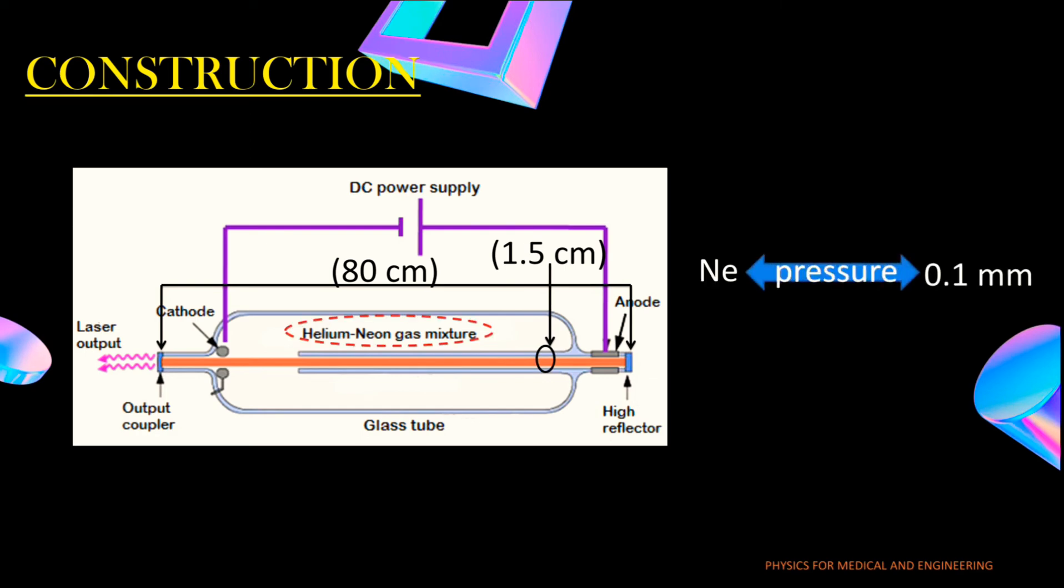This tube is filled with a mixture of neon under a pressure of 0.1 millimeter and helium under a pressure of 1 millimeter. There is a majority of helium atoms and minority of neon atoms. At one end of the tube there is a perfect reflector while on the other end there is a partial reflector. The active material is excited by applying a few kilowatt DC power supply.